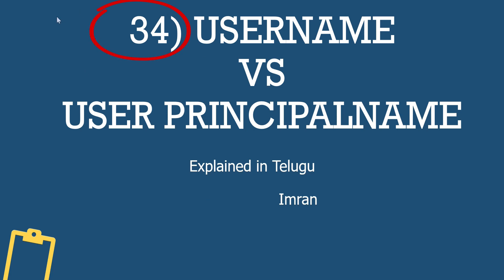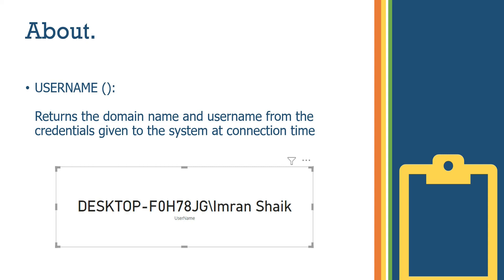Today's topic is USERNAME versus User Principal Name. This is one of the important interview questions, like RLS — row level security. Dynamic row level security uses either user principal name or username to implement your security system. We will cover a brief description and quick demo.